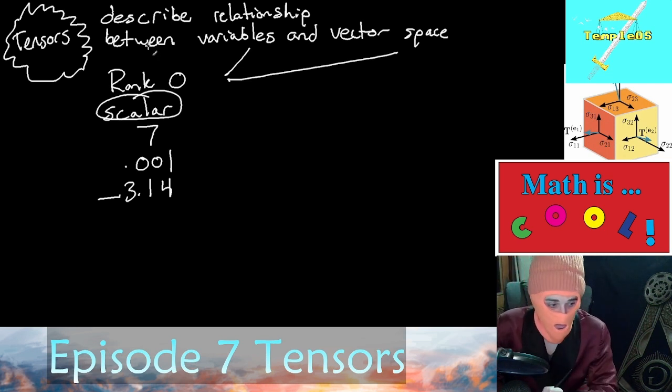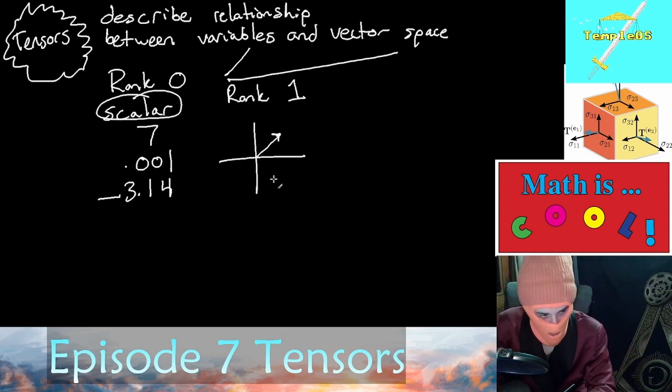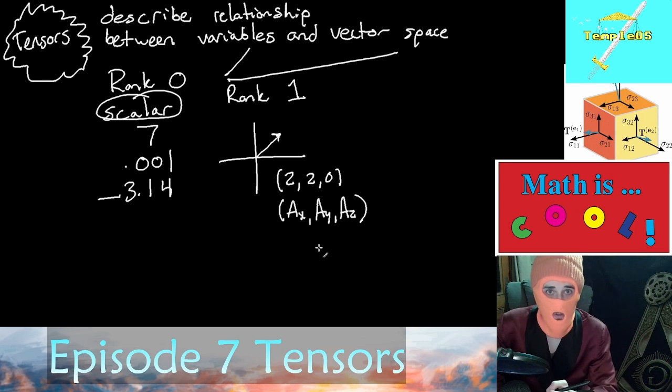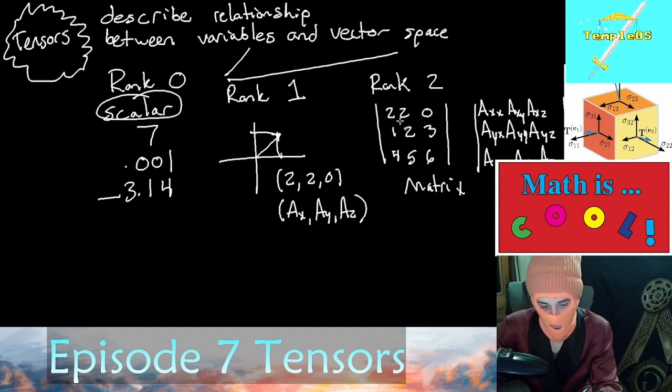We have rank one tensors with vectors. We can represent things like area or even a point in vector space. Matrices are rank two tensors, and as we can see, they can represent multiple vectors. We can always find any particular value by looking at its position in the matrix.